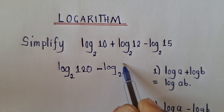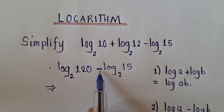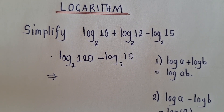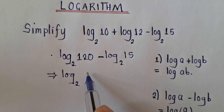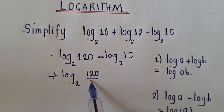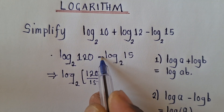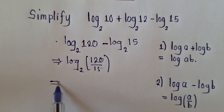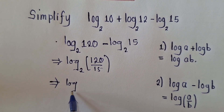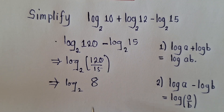Then we have minus log base 2 of 15. Applying property 2, the minus sign changes to division, so we get log base 2 of 120 over 15.